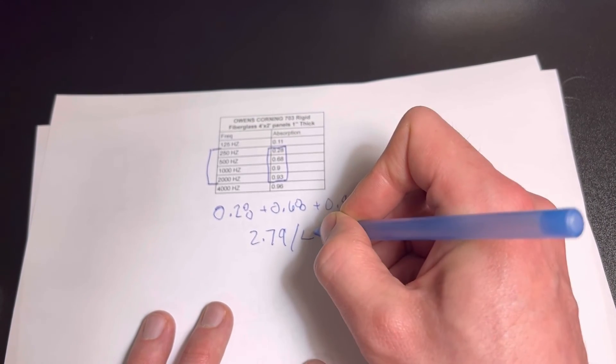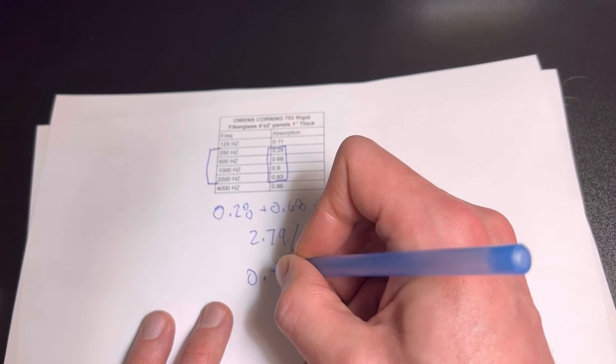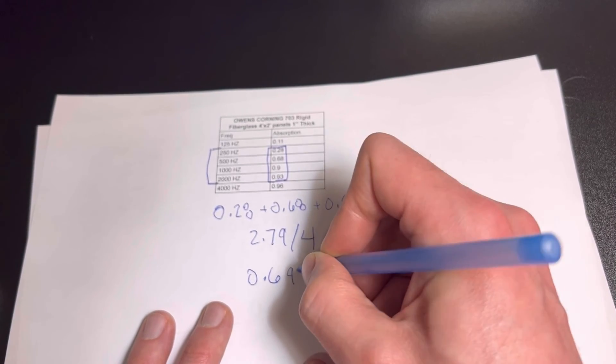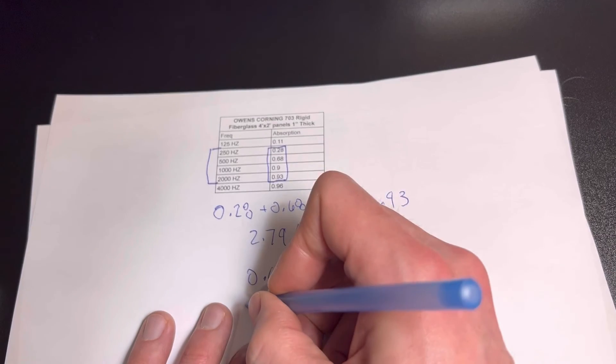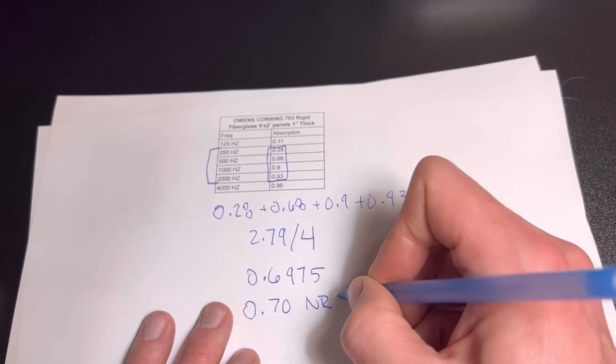Then to get the average, we'll divide that by four. It's going to get us 0.6975. We're going to round that to 0.70, which is going to be our NRC.